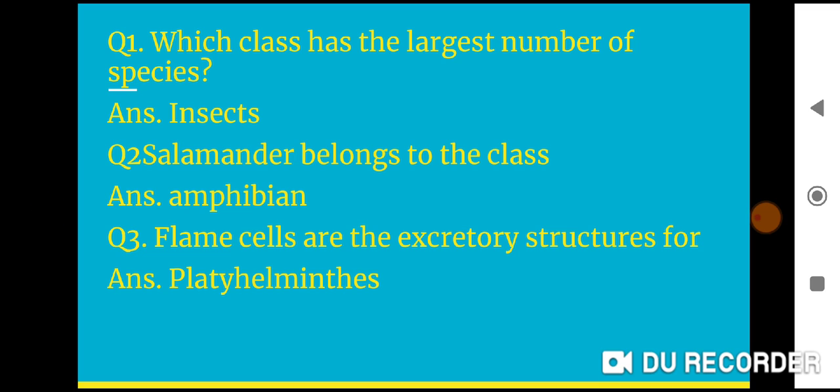Question 1: Which class has the largest number of species? Insects has the largest number of species. Question 2: Salamander belongs to the class Amphibians.